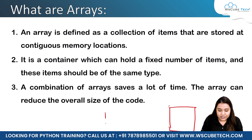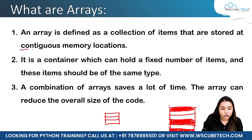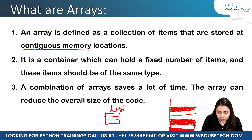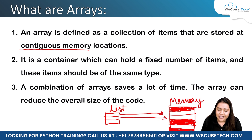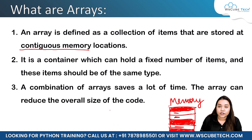Let's understand contiguous vs. non-contiguous memory with an example. Imagine this is your memory with some spaces filled and some free. A list has three elements — one, two, and three. Each element goes and finds wherever there is an empty space. So element one goes here, element two goes there, and element three finds another free spot — this is non-contiguous memory.